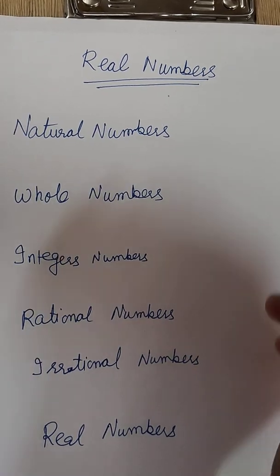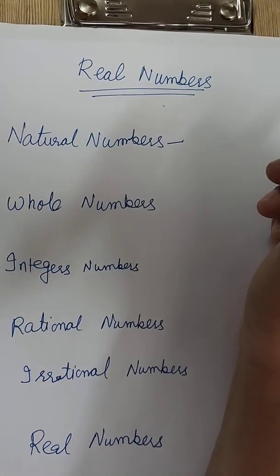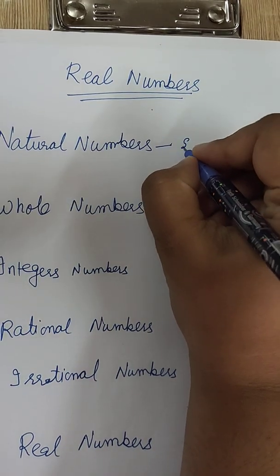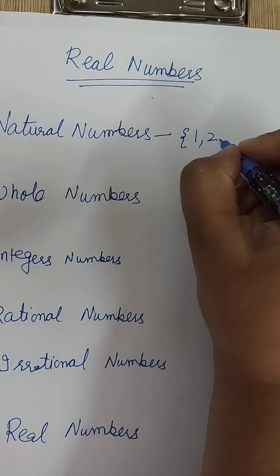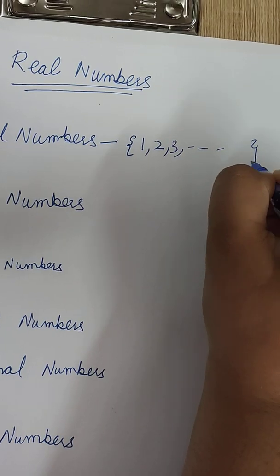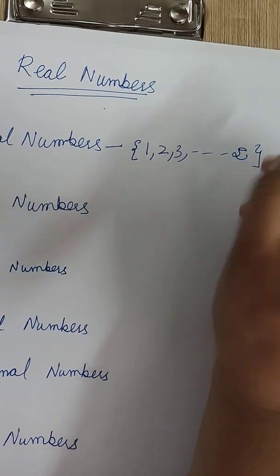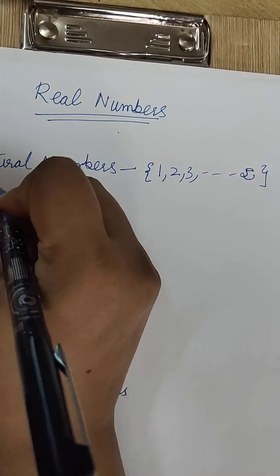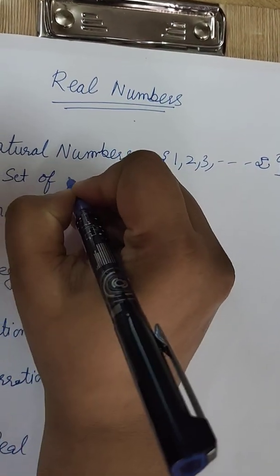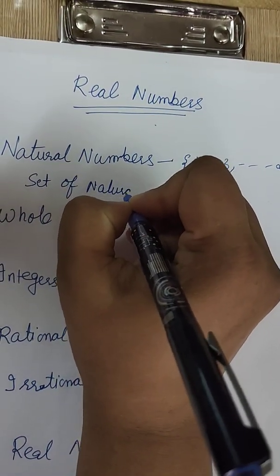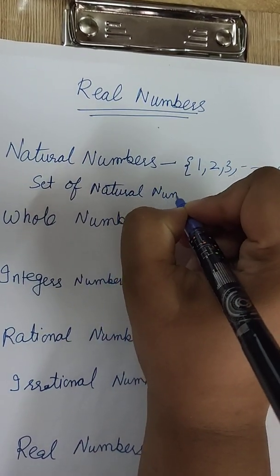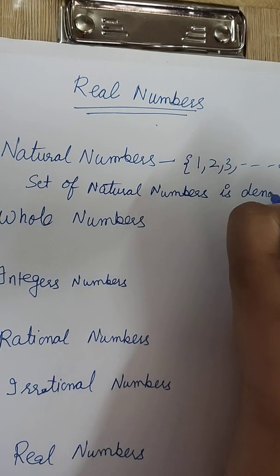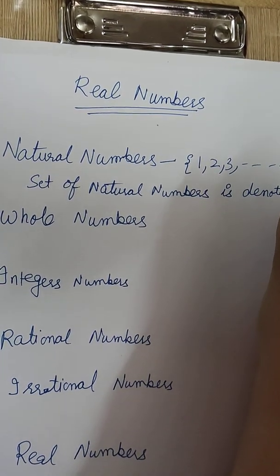See, what these numbers are. What are natural numbers? These are used for the counting numbers. So it starts from 1, 1, 2, 3 and goes to infinity. Infinity means it doesn't have any end, it has no end.